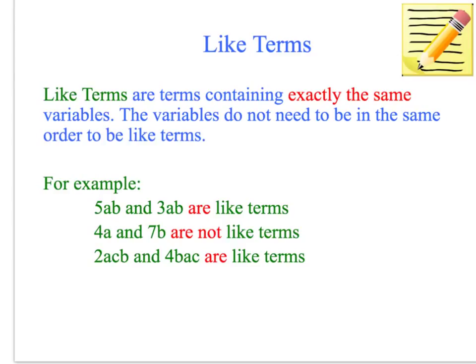Now 4a and 7b are not like terms because their variables are different. You've got an a and a b.